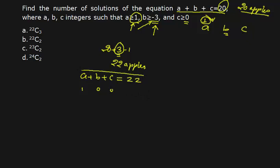Now I am ready to apply the formula and the formula is n plus r minus 1 c r minus 1. Here n will be 22 r is 3 minus 1 c 3 minus 1. So the value will be 24 c 2 which is option t.